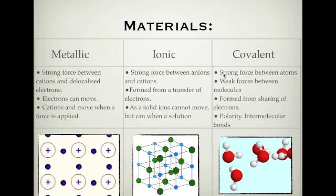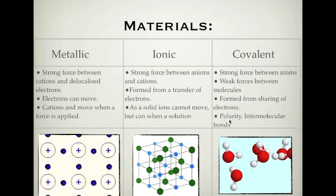Covalent compounds have a strong force between atoms — for example, in water, there's a strong force holding the two hydrogens and oxygen together. However, there is a weak force between two water molecules, so we don't need much energy to boil it because boiling just breaks this weak intermolecular force. Covalent compounds are formed from a sharing of electrons — a very important difference from ionic bonds, which involve a transfer. In covalent compounds, we have polarity and intermolecular forces, which, although very weak, are where a lot of emphasis lies when explaining properties.